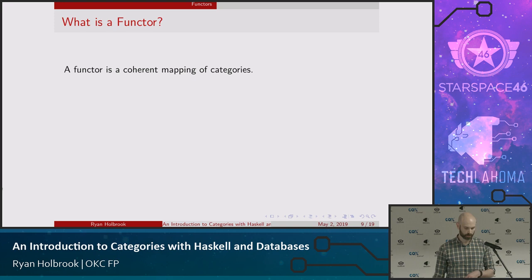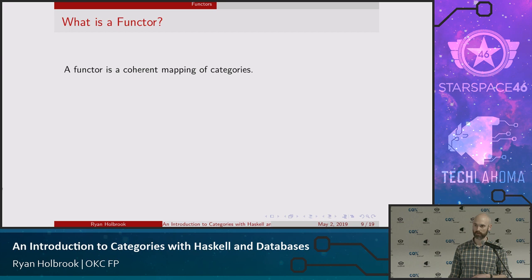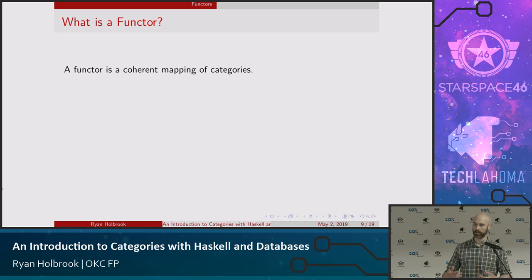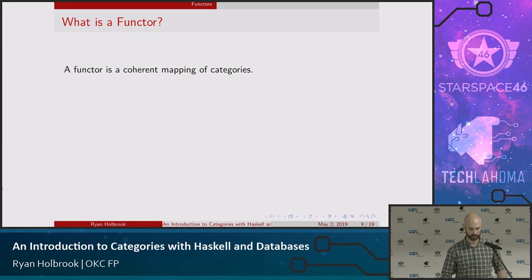Now that we know about categories, let's look at how we can translate between them. Especially with data programming, one of the biggest problems is how to transform one kind of data into another. In Haskell, when you apply a functor or work inside a monadic environment, you're taking your ordinary type system and transforming it into a kind of parallel type system — again, a kind of data transformation.